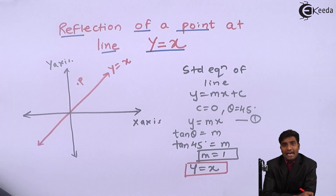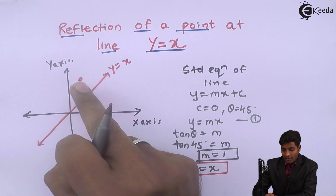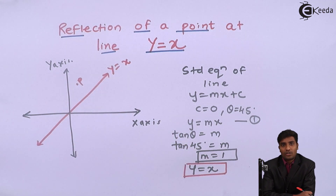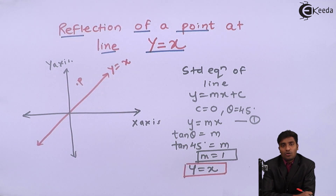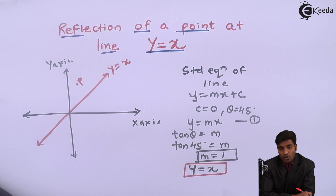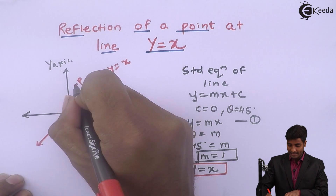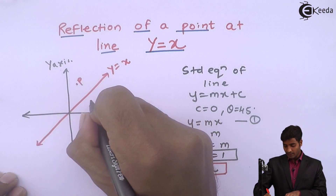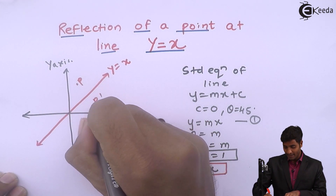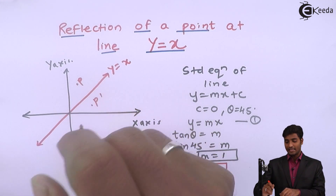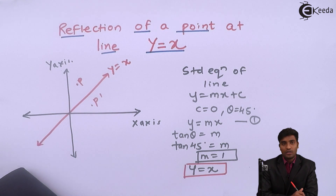We don't have any direct matrices for reflecting a point about the line y is equal to x, so we have to perform a series of transformations. I will perform a series of transformations for reflecting this point. I will name P dash as the reflected point.